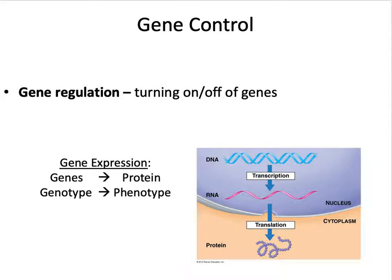Why do we need to turn genes on or off? Aren't they just on all the time? No, they're not. Sometimes we need to turn them on to respond to certain environmental changes. For example, E. coli will only turn genes on to metabolize lactose when it's in its environment; at other times those genes are turned off. This saves the organism resources and energy.